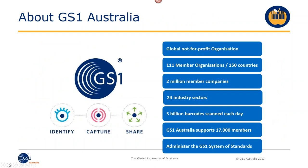When we talk about standards, we really just talk about an agreement between trading partners to use a common language. GS1 Australia provides the GS1 numbering system within Australia to our members. We are a not-for-profit standards organization and there are 111 GS1 member organizations around the world, looking after over 150 countries across many different industry sectors. You could sell your mangoes to the grocery industry and also through food service channels into aged care, mining facilities, or correctional facilities.